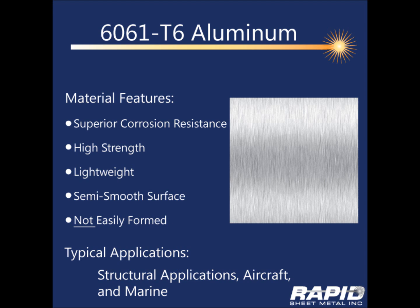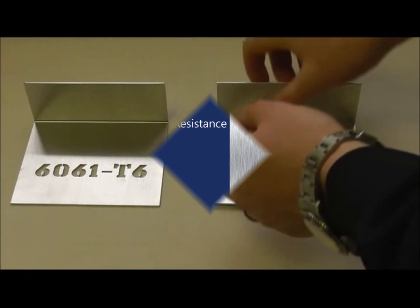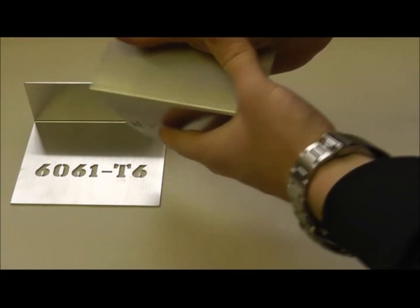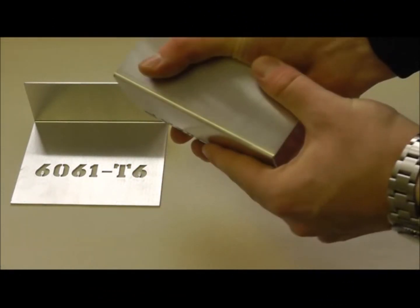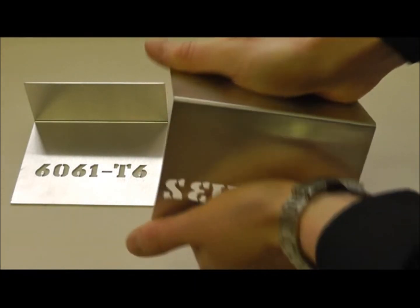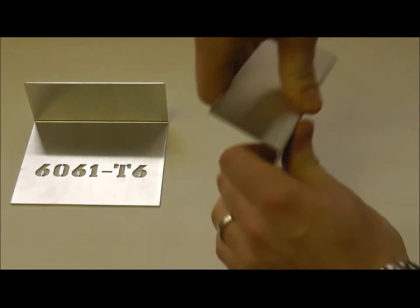This same characteristic of 6061T6 makes it a bad choice for sheet metal fabrication because it tends to crack when forming. Parts formed with 5052H32 aluminum will not break at the bend even if there is a sharp bend radius as small as 30 thousandths of an inch.